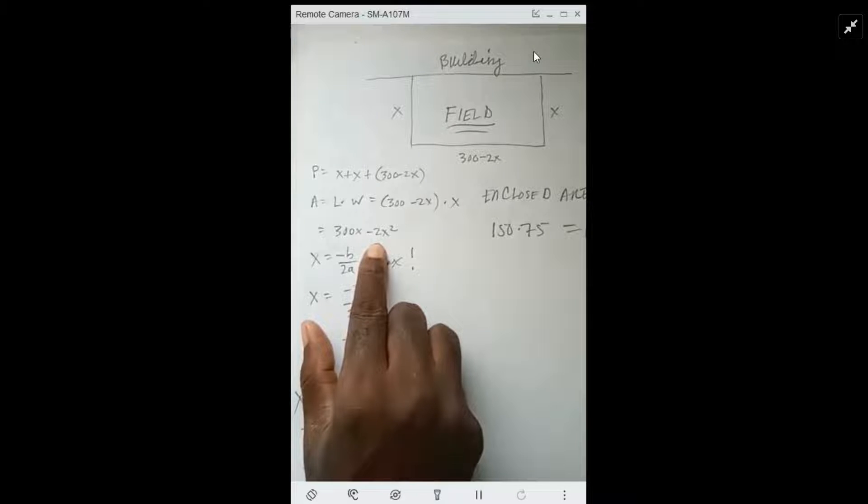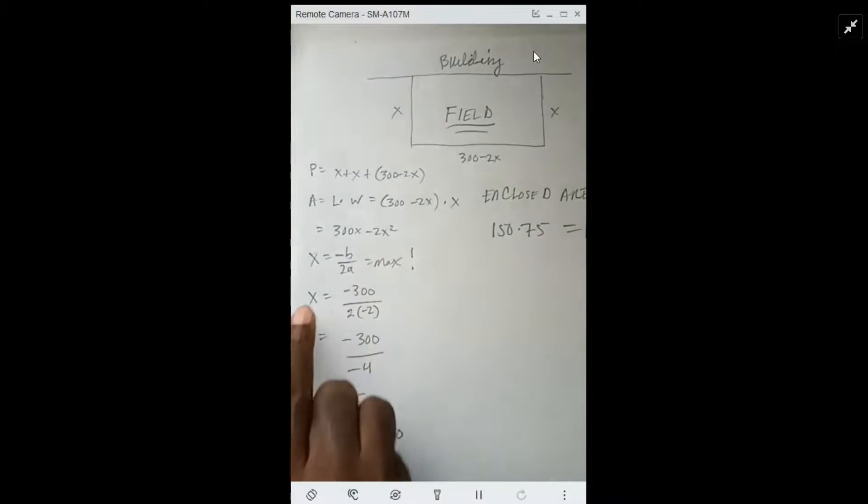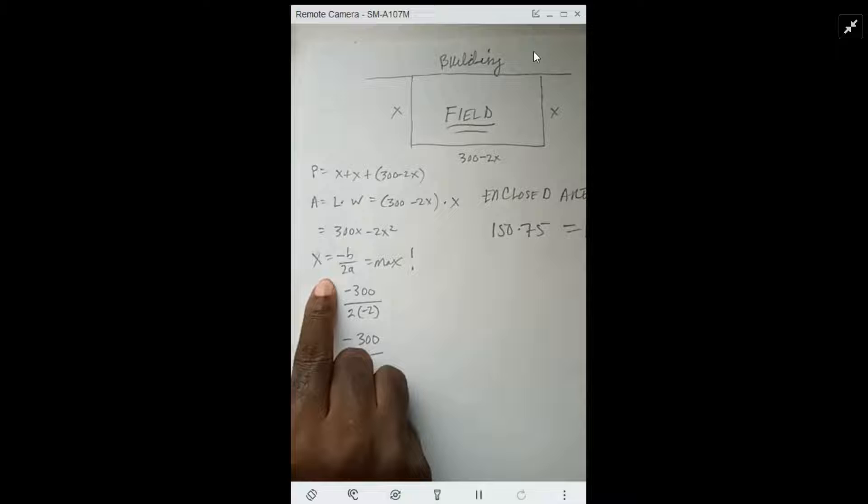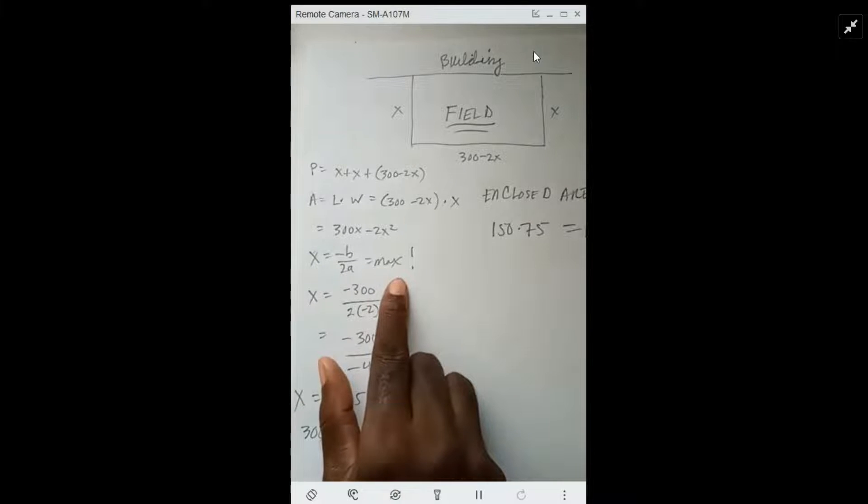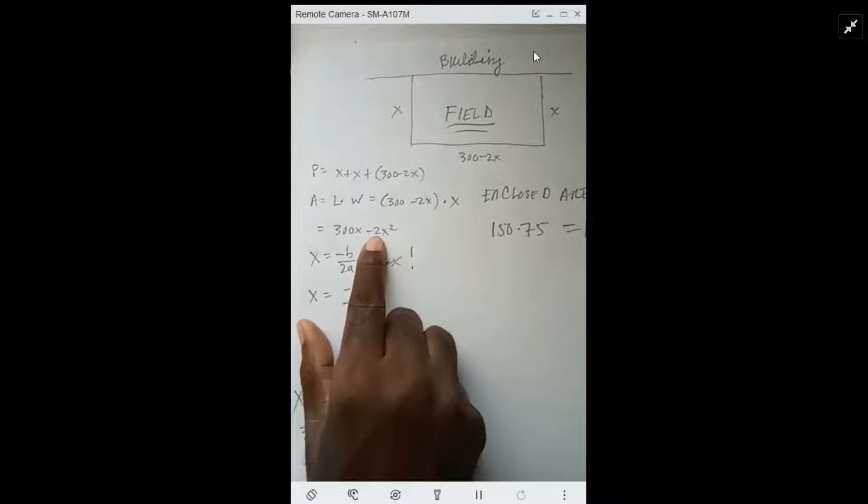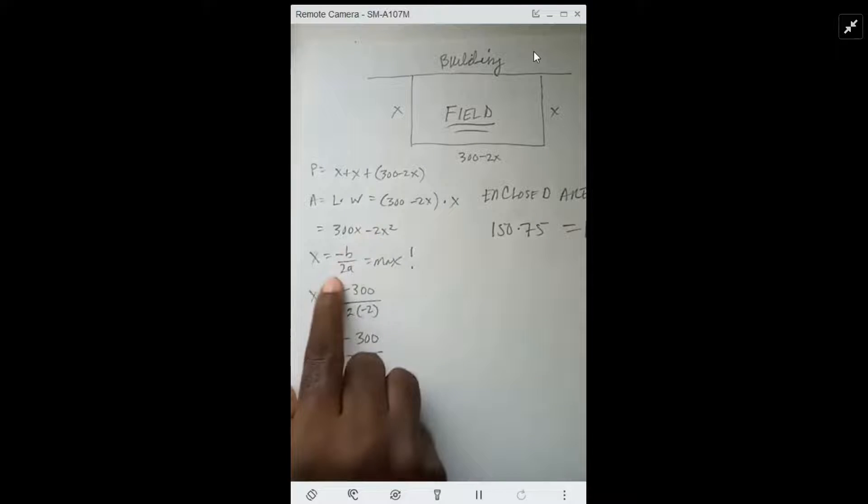This means that it's a downward facing parabola, which also means that the line x equals negative b over 2a is a max. If this coefficient was positive, then the line x equals negative b over 2a would be a min.